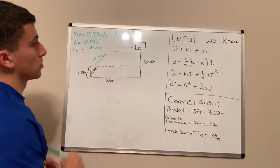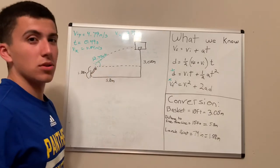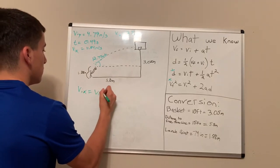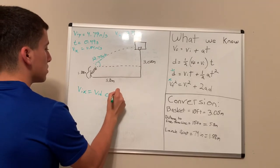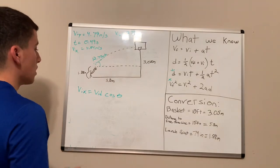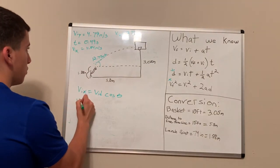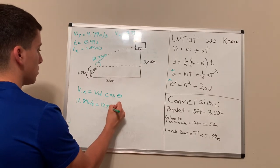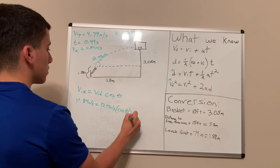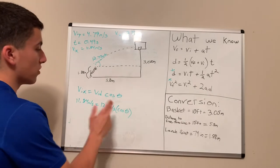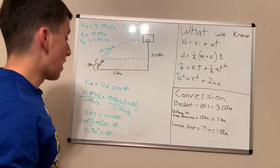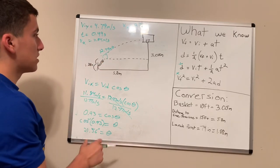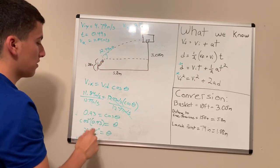Now that I have all these values, I want to solve for the angle at which I shot the basketball to make the free throw. Using the equation V_ix = V_id · cos(θ): 11.84 m/s equals 12.77 m/s times cosine of theta. After doing all the math, I found that theta equals 21.56 degrees. So the angle at which I shot the basketball was 12.77 meters per second at 21.56 degrees.